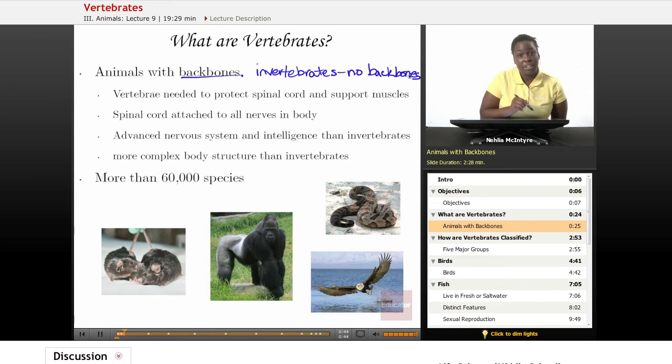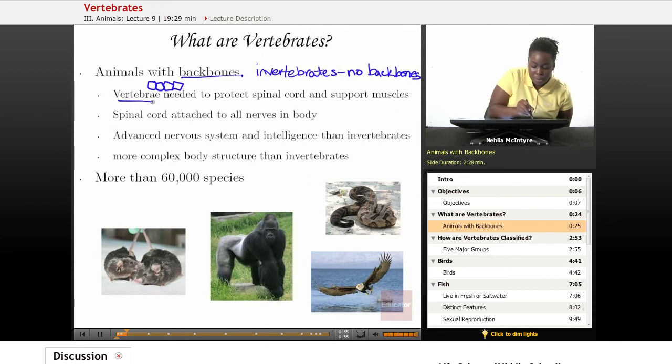So vertebrates get their name because they have this backbone that's made up of different bones, and we call these different bones that make up the spine vertebrae. And these vertebrae are needed to protect what's inside of the vertebrae, the spinal cord.